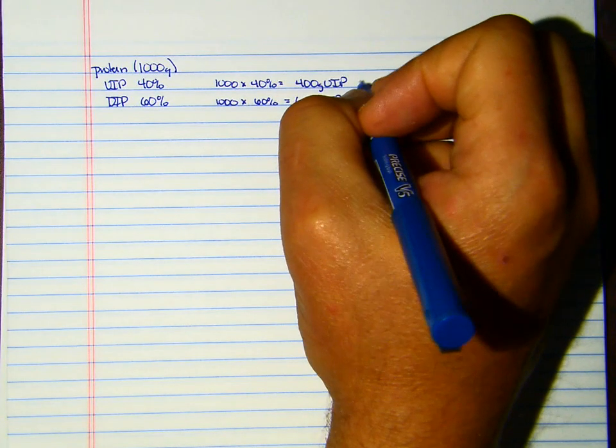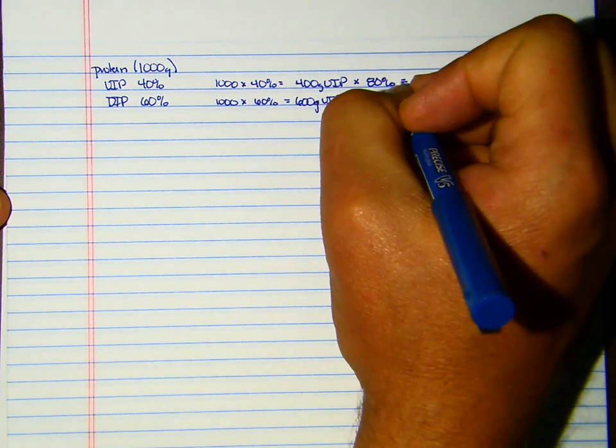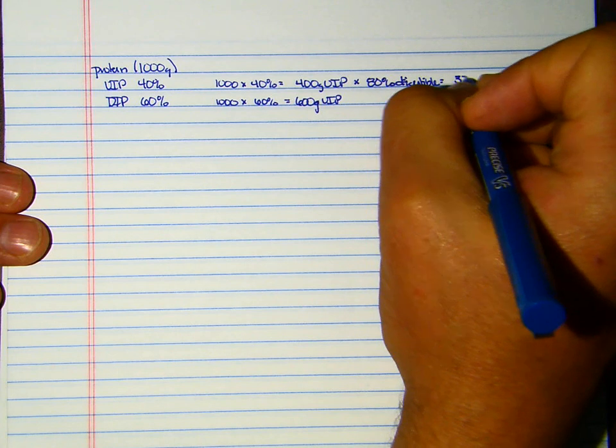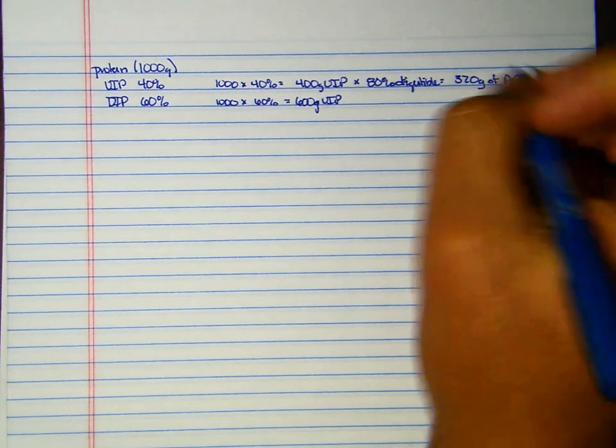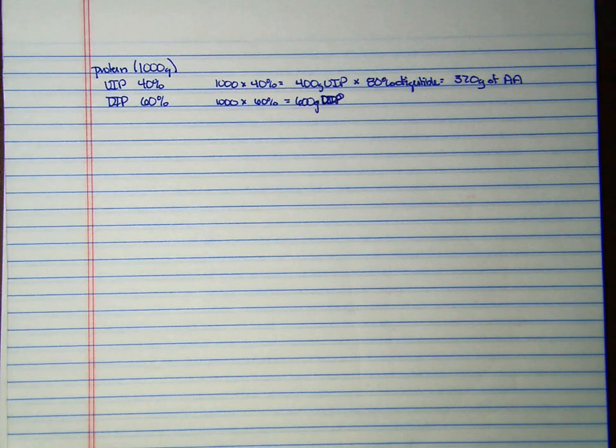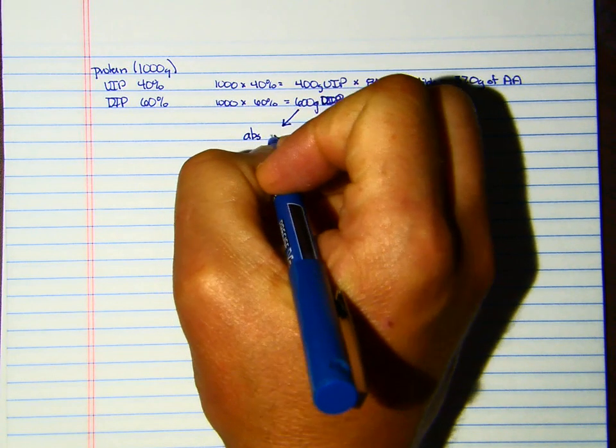We said that UIP, if you go back and look at the notes, is on average approximately 80% digestible, which means 80% of it will be absorbed. So we're going to absorb 320 grams of amino acids, dipeptides, and tripeptides. 600 grams of DIP means all 600 grams of that by definition will be digested. It's all going to be digested because to be degradable means you must be digestible.